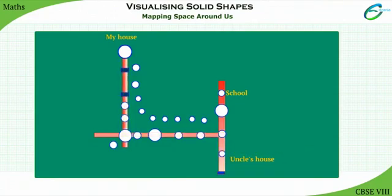How far is his house from his uncle's house? From this map, it is very difficult to find which place is near to his house. We do not know the distance between the circles. So, there is a lack of information, and hence, we cannot answer the questions above.